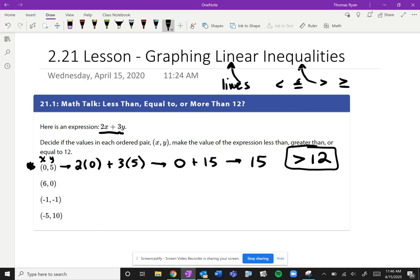Then we're going to test (6, 0). We're going to plug in 6 for x, 0 for y. 2 times 6 is 12, 3 times 0 is 0, so we get 12. In this case, we see that's equal to 12.